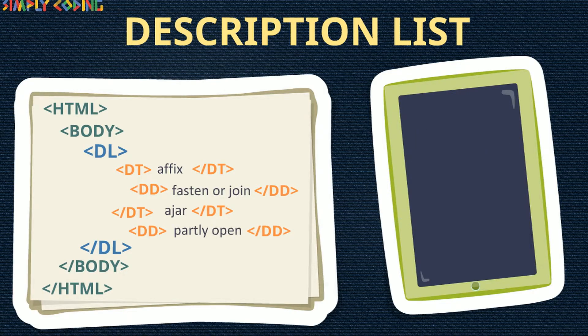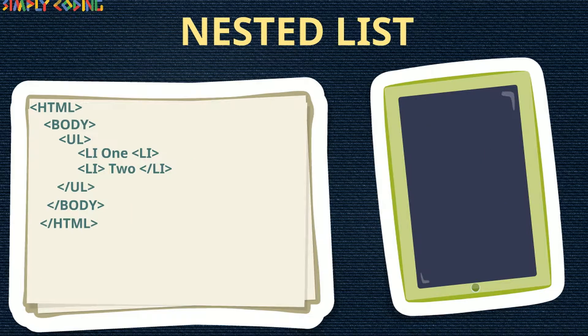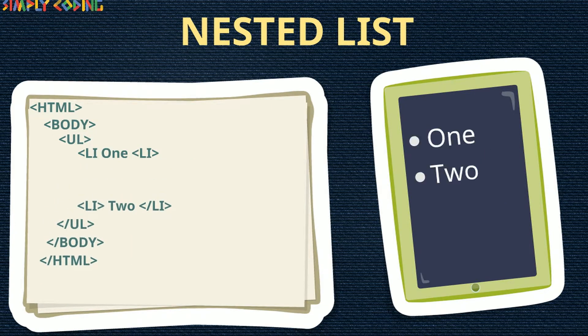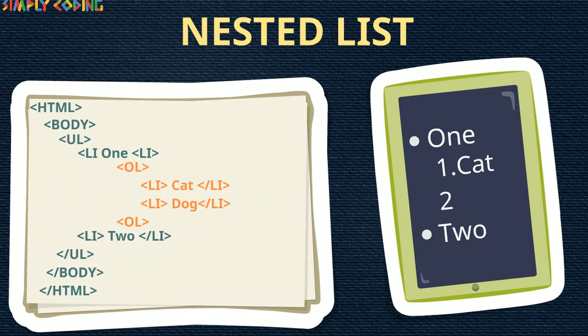You can also nest other tags inside it. For example, if you want to make the definition term bold. You can also nest a list within another list, as shown in this example.